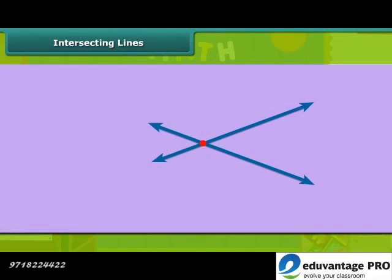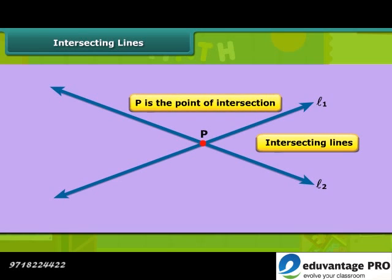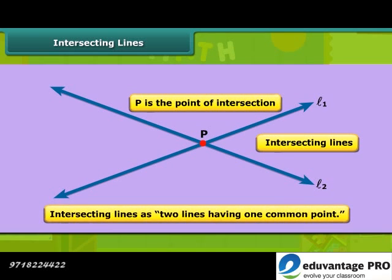Look at the figure. When two lines pass through a single point, we call them intersecting lines. Two lines L1 and L2 pass through a point P — then L1 and L2 are intersecting lines and P is the point of intersection. We can also define intersecting lines as two lines having one common point.